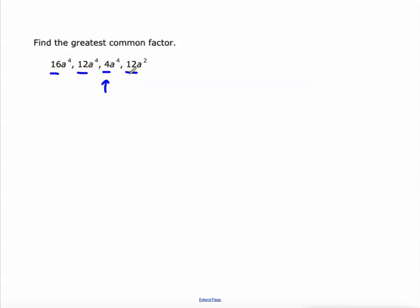12 is divisible by 4. 12 is divisible by 4. So 4 is the greatest common factor. If 4 wasn't a factor of all of them, then I would go to the next factor of 4, which would be 2. And I'd check to see that they're each divisible by 2. But they are all divisible by 4.